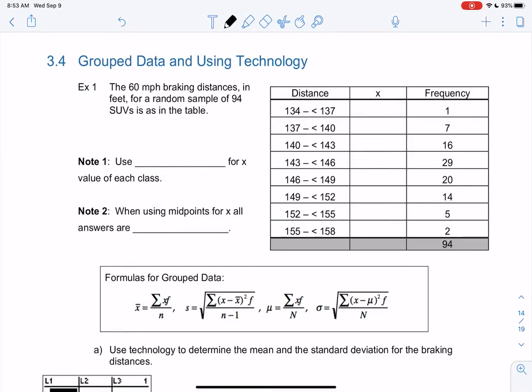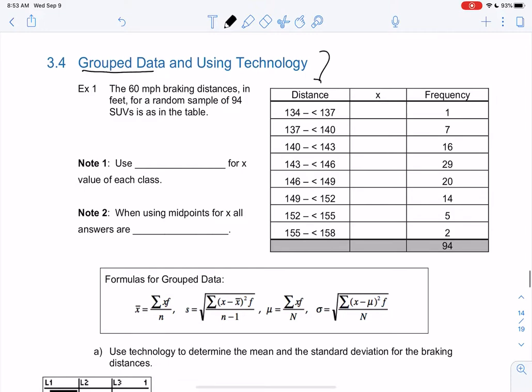Alright, let's look at 3.4. So 3.4, we're just going to do more means and standard deviations, but with grouped data. So grouped data is like this table where we had that range of numbers. Rather than a single number, we grouped all of the data from 134 to 137 together.